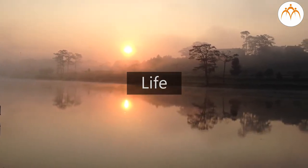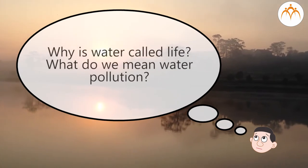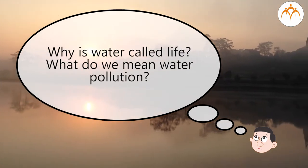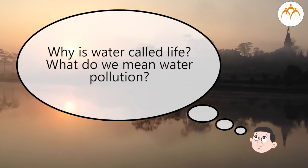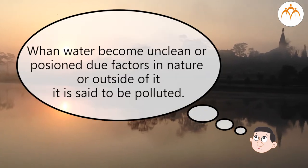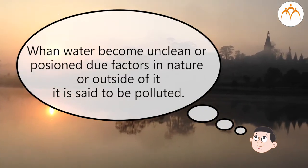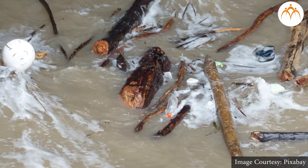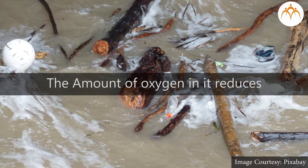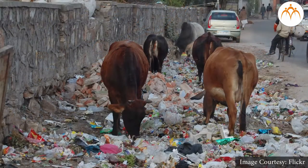We always hear that water is life. Why is water called life? What do we mean by water pollution? When water becomes unclean or poisoned due to any factors in nature or outside of it, it is said to be polluted. The amount of oxygen in it reduces and so living things are badly affected by it.